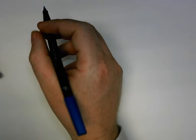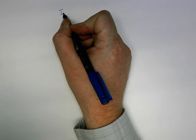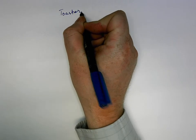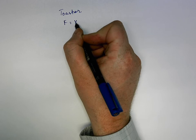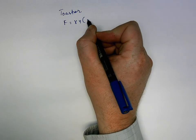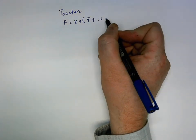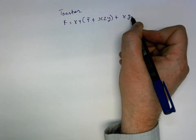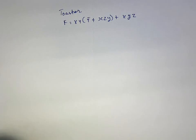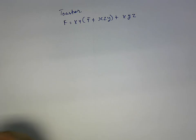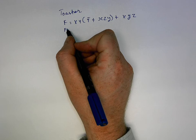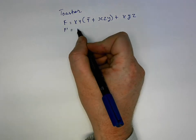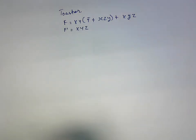Hello again, Digital Circuits Part 2. So what we need to look at again is the toaster, where the expression we wrote was equal to x, y, to y, x, z, y, or x, y, z. Now, an interesting thing here is because we reduced it down, we can say that f prime is equal to x, y, z, and from the last video clip we proved that these two were equal.